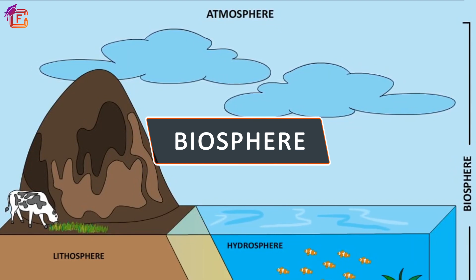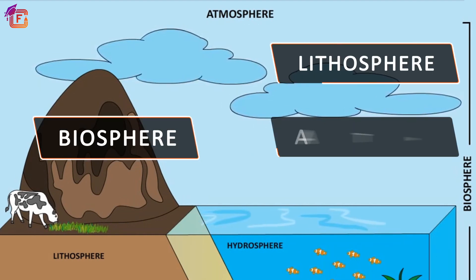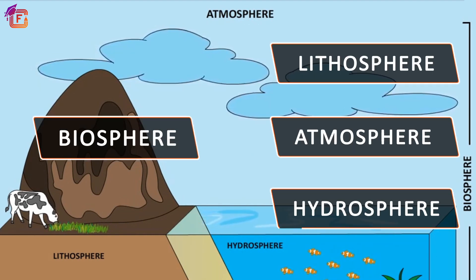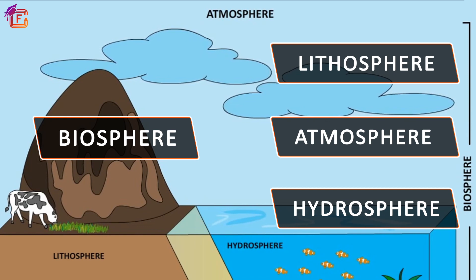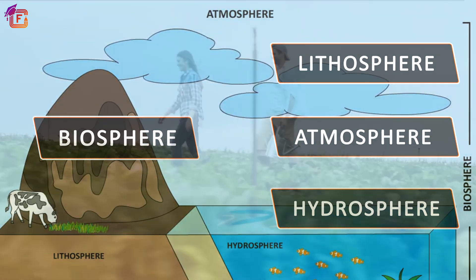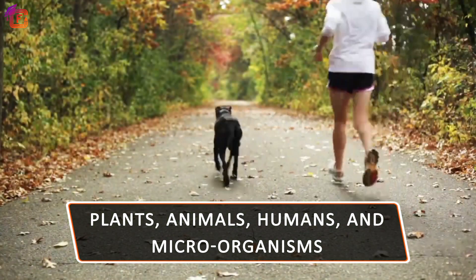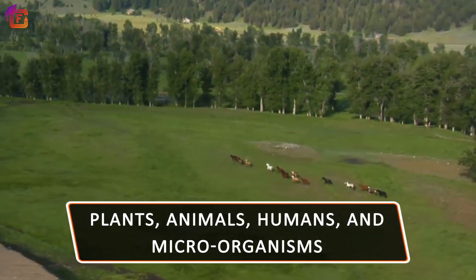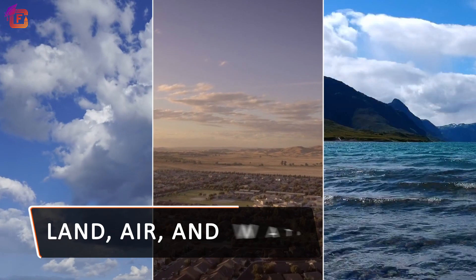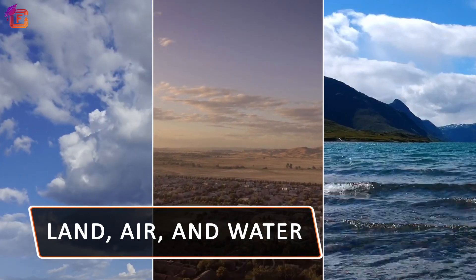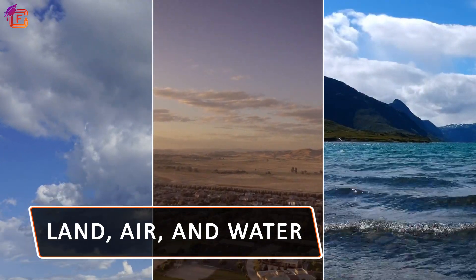Now the biosphere is the domain of the earth which arises due to the interaction of the other three domains, namely lithosphere, atmosphere, and hydrosphere. It is the sphere of life on earth. The biosphere consists of plants, animals, humans, and microorganisms. There is an interaction between these organisms with each other and with the environment. The biosphere is a narrow interactive zone between land, air, and water — it is in this narrow zone that life exists.